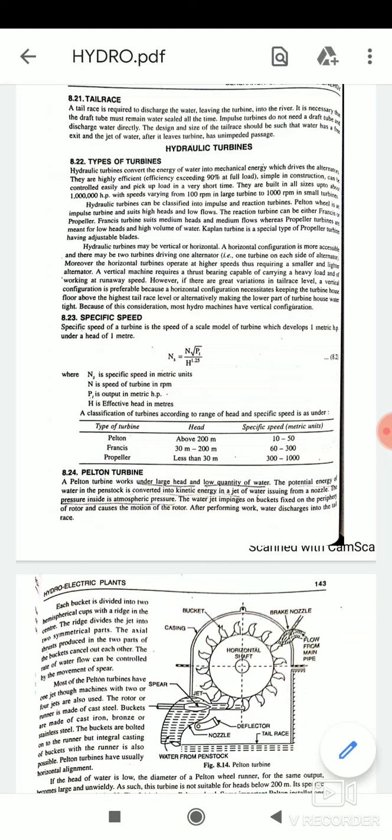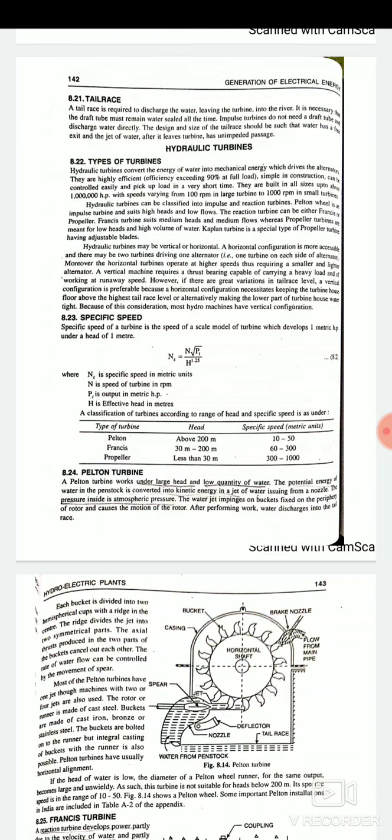Hydraulic turbines can be classified into impulse and reaction turbines. Pelton wheel is an impulse turbine and suits high heads and low flows. The reaction turbine can be either Francis or propeller. Francis turbines suit medium head and medium flows whereas the propeller turbines are meant for the low heads and high volume of the water. Kaplan turbine is a special type of propeller turbine having adjustable blades.